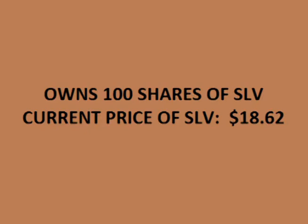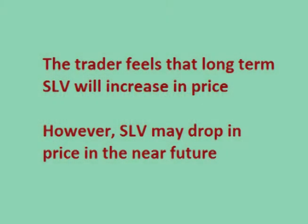Let's say a trader owns 100 shares of a stock or ETF. For this example I will use SLV, the silver ETF. At the time of making this video, SLV has a current price of $18.62 per share. This trader feels that SLV will increase in value long term so he doesn't want to sell it. However, he is concerned that the price of silver may make a big drop sometime in the near future, for some reason such as economic news due to be released soon.